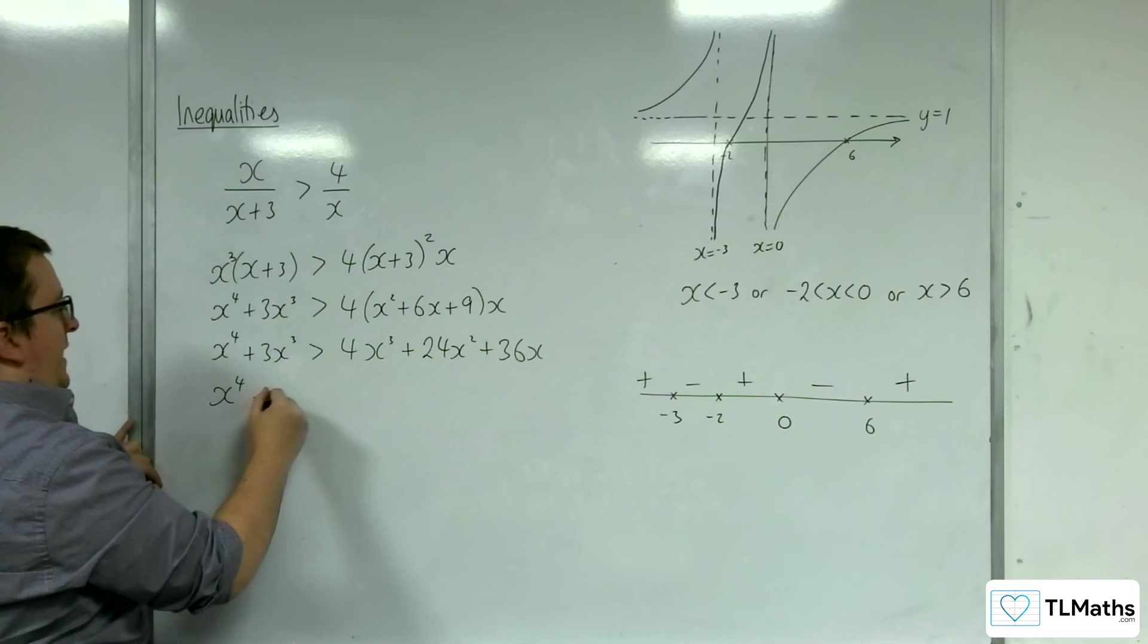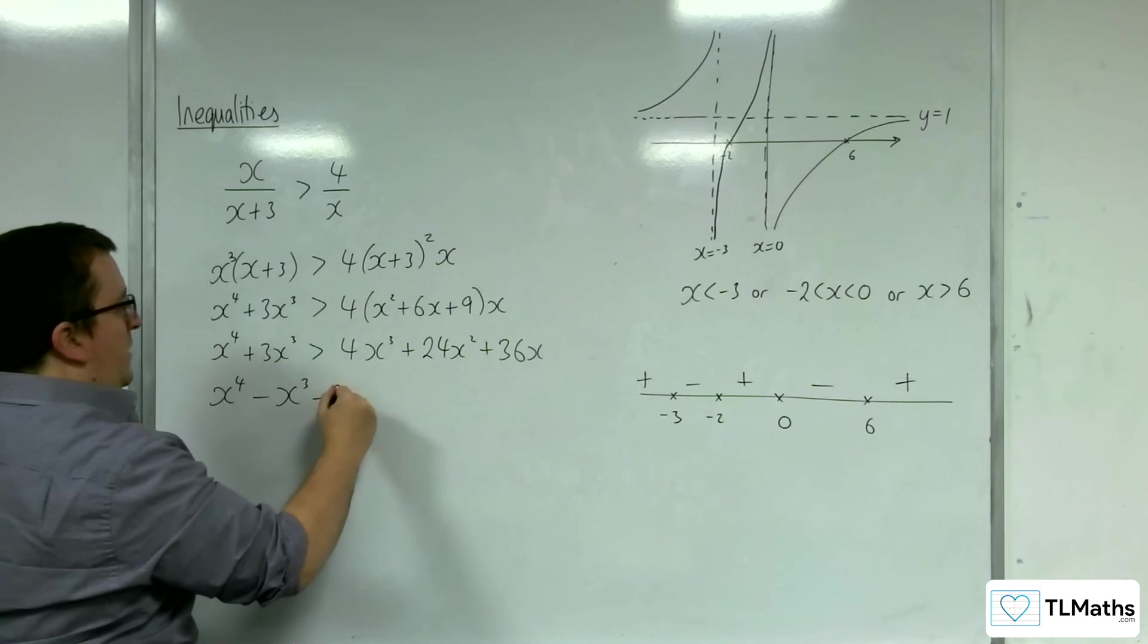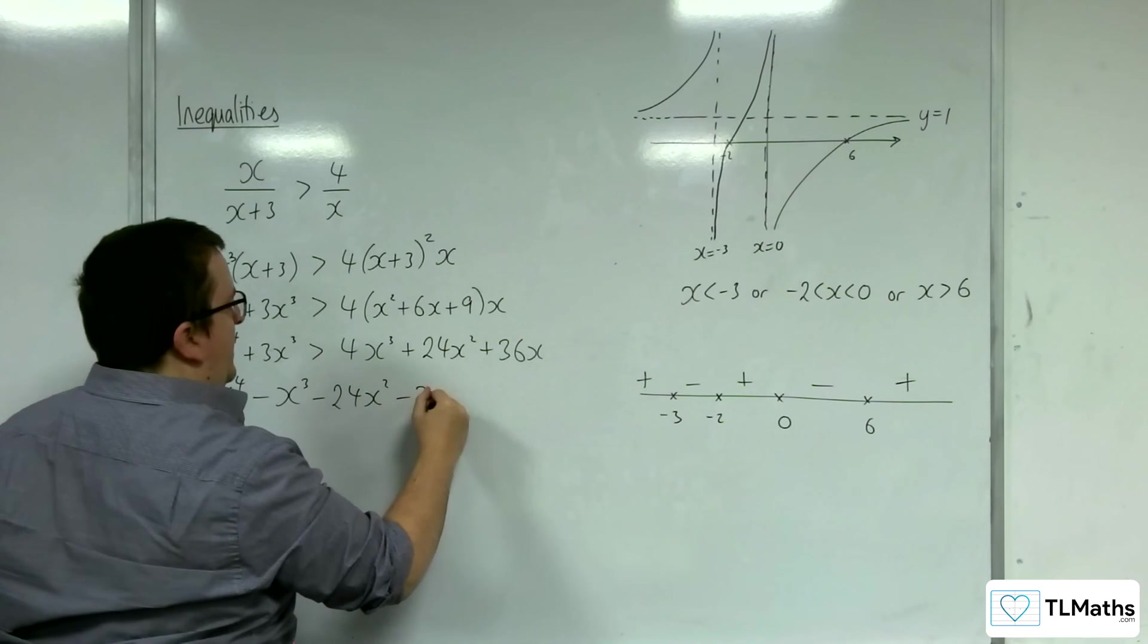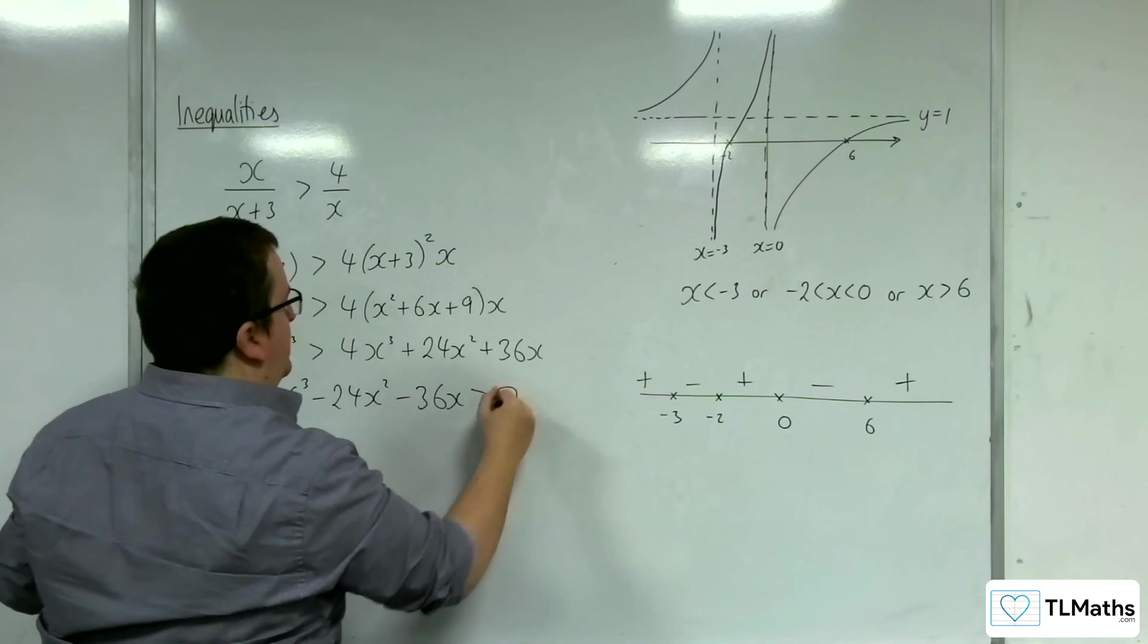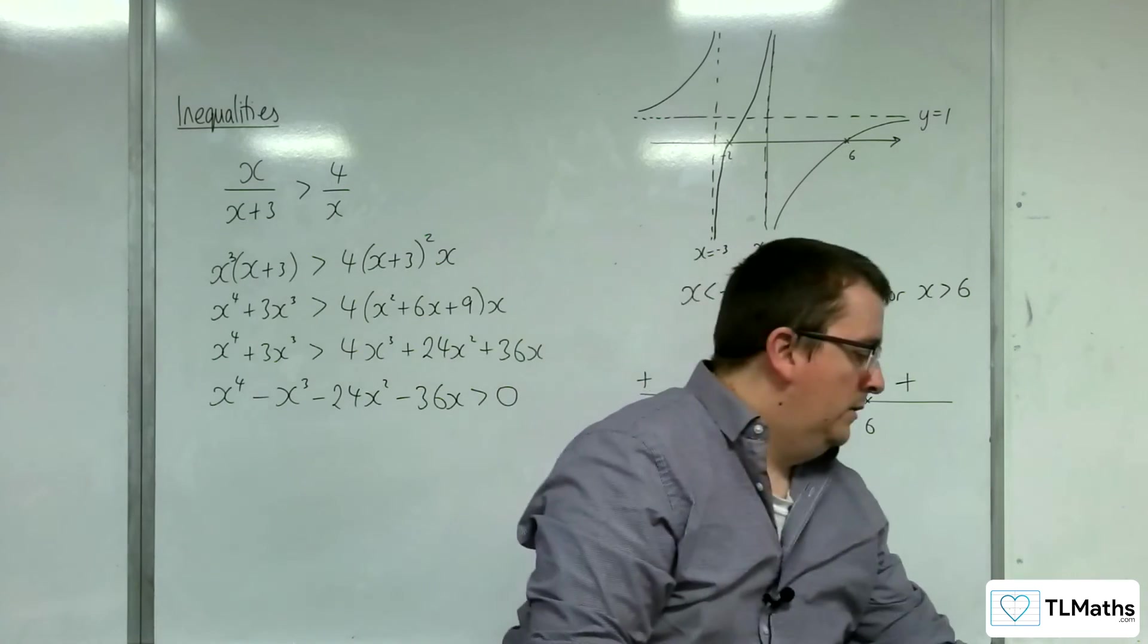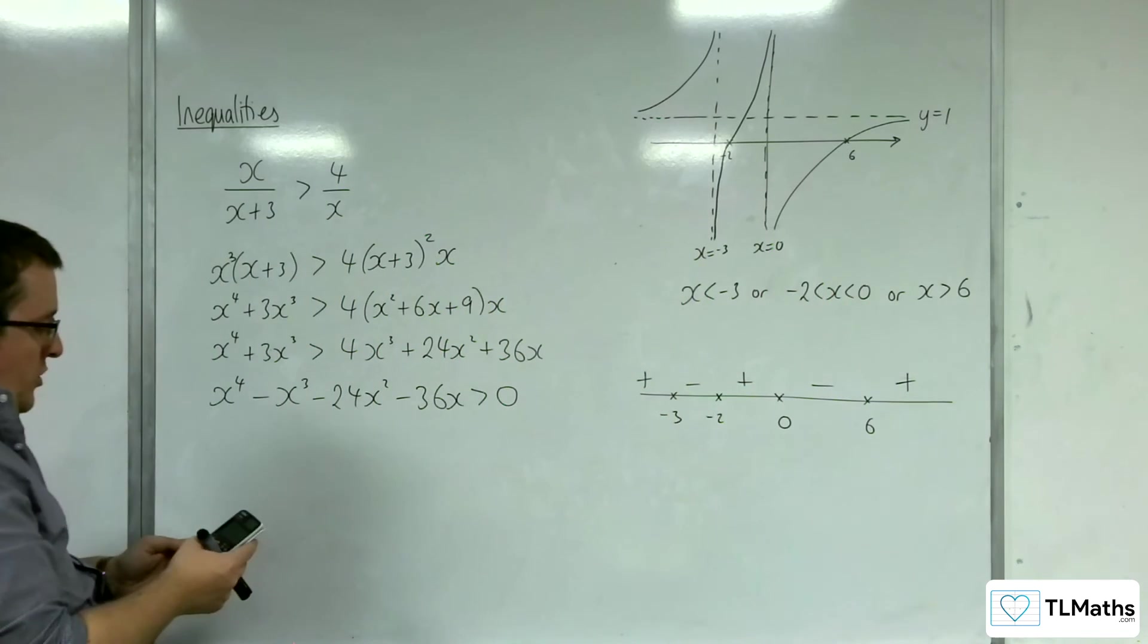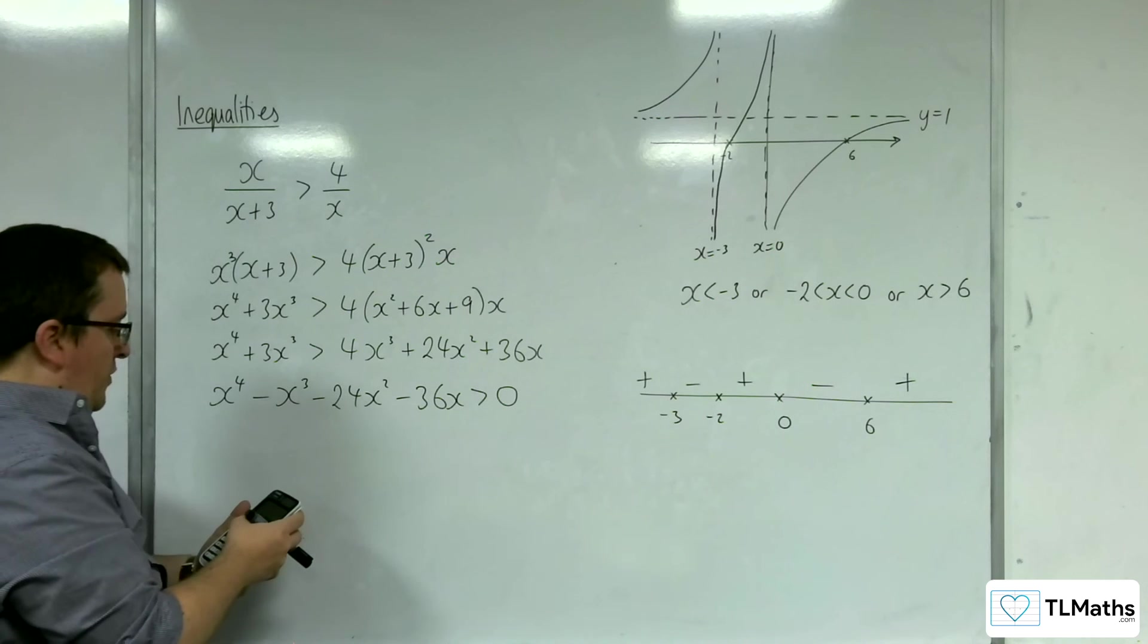Now we want to move everything on to the left-hand side. So x to the 4 take away x cubed, take away 24x squared, take away 36x is greater than 0. And then I'm going to solve the quartic.